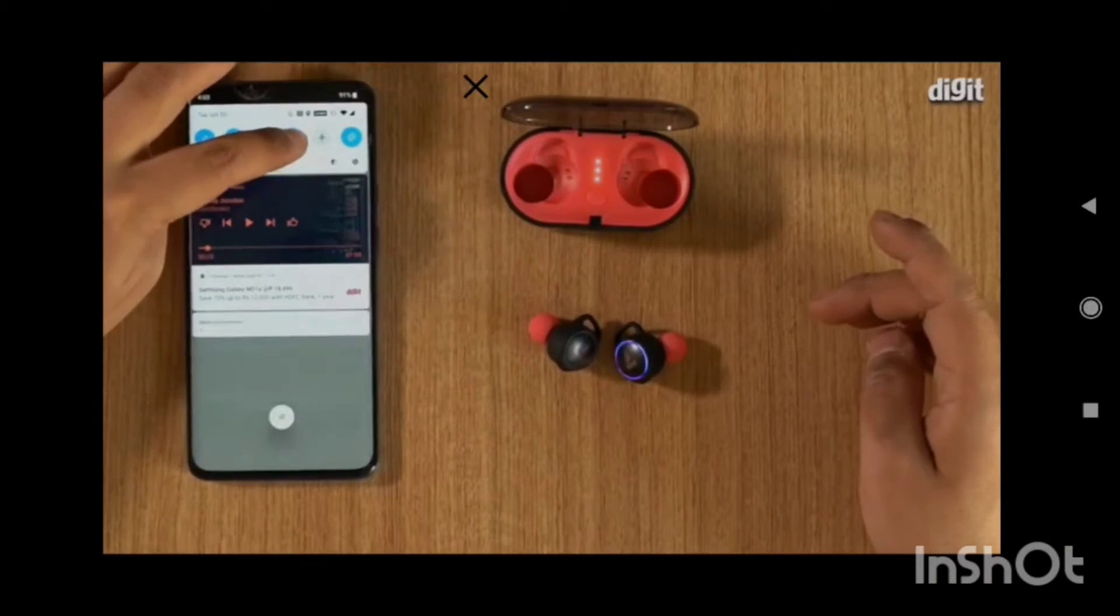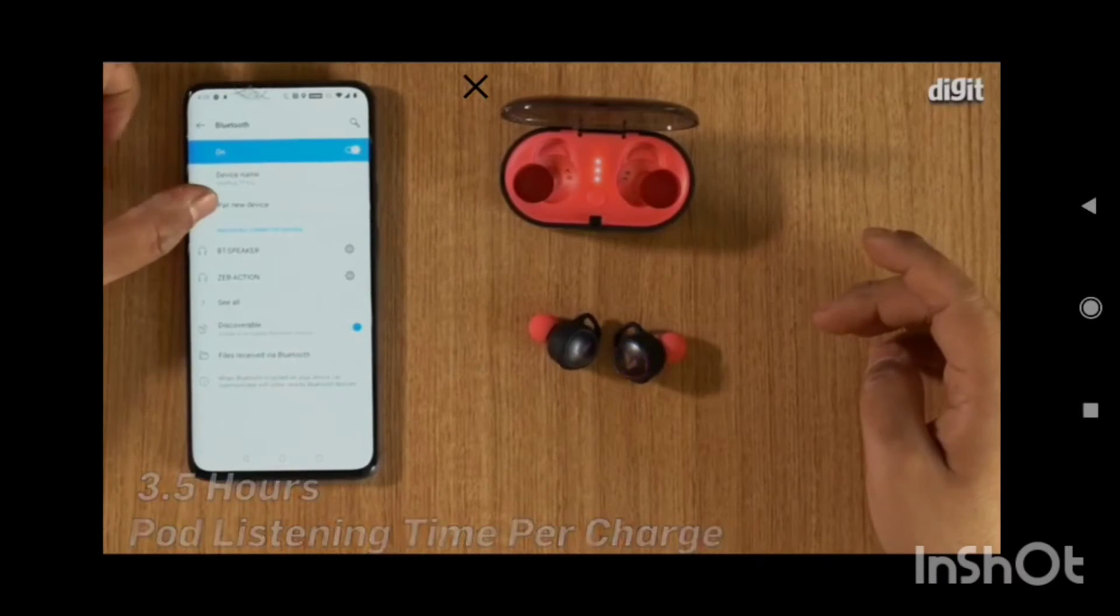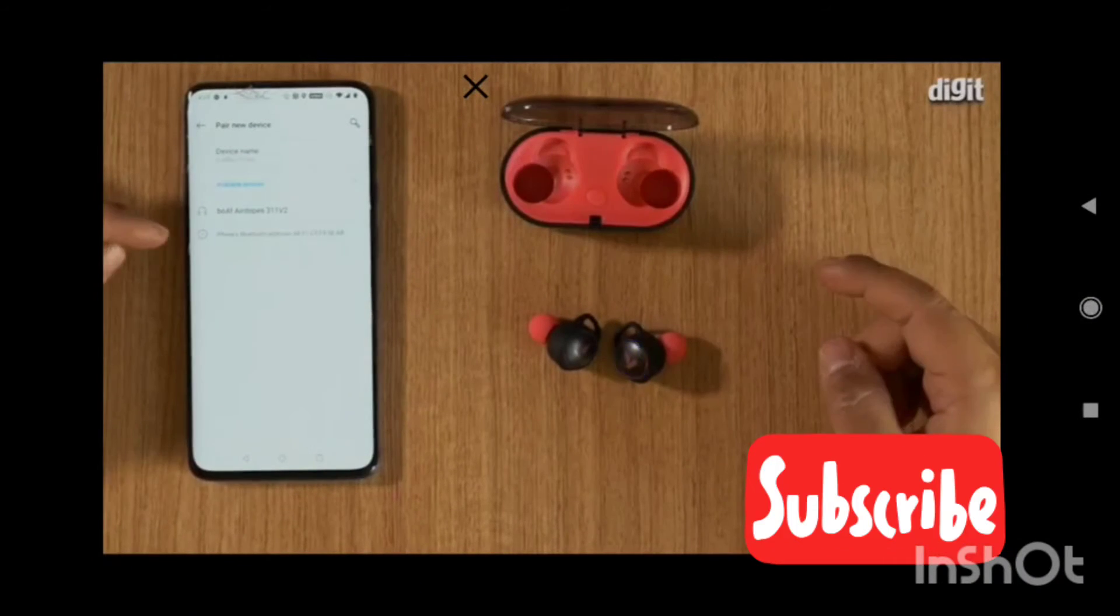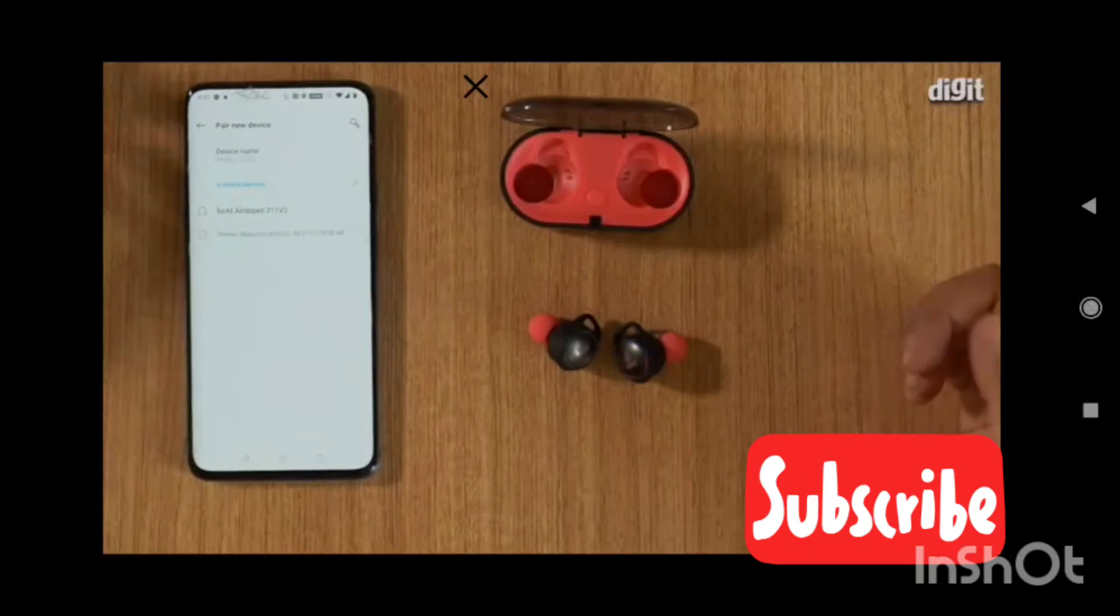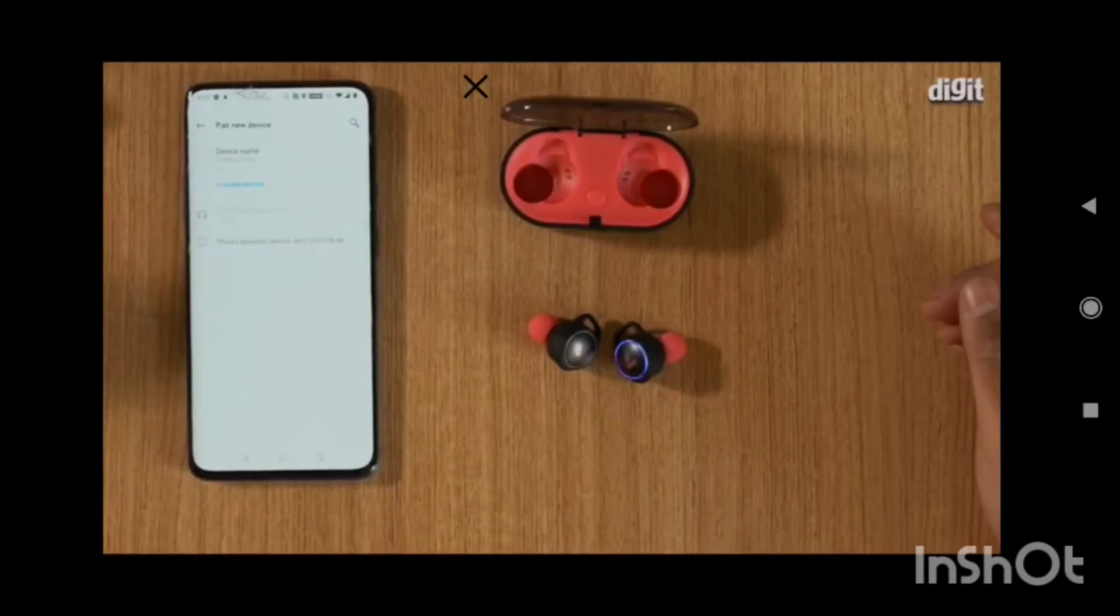Now on your smartphone, you need to go into your Bluetooth settings and make sure your Bluetooth is switched on. Click pair new device. As soon as you click pair new device, these show up as the BORT AirDope's 311v2. Go ahead and click pair.